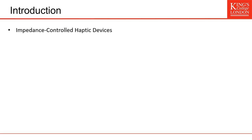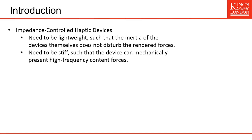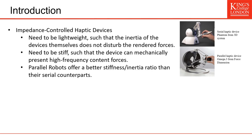When you use an impedance control haptic device, you provide position control to a virtual or remote environment and you receive force feedback from this environment. You want your device to be light because you don't want the inertia of the device to disturb the rendered forces, but you also want it to be stiff such that the device can mechanically present high frequency content forces. That's why parallel robots have been increasingly used as haptic devices because they present a better stiffness inertia ratio than their serial counterparts.